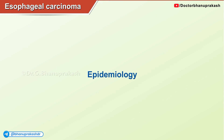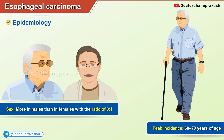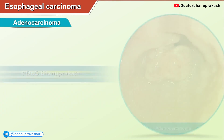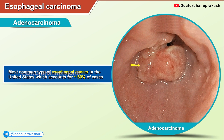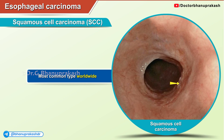Epidemiology: esophageal carcinoma is more common in males than females with a ratio of 3 to 1. Peak incidence is at 60 to 70 years of age. Adenocarcinoma is the most common type of esophageal cancer in the United States, accounting for approximately 60% of cases, while squamous cell carcinoma is the most common type worldwide.